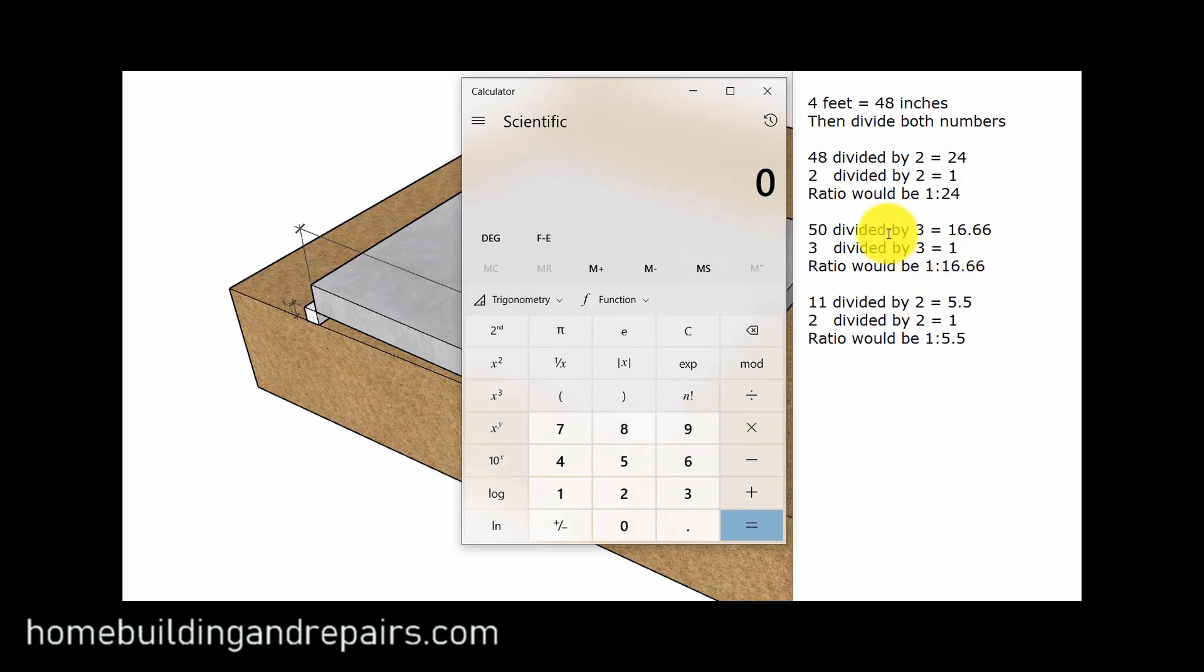We're going to come up with a ratio of 1 to 16.66. When I'm dividing these, I'm just simply going to put 50 in, divide it by 3, and there's our number, 16.66.